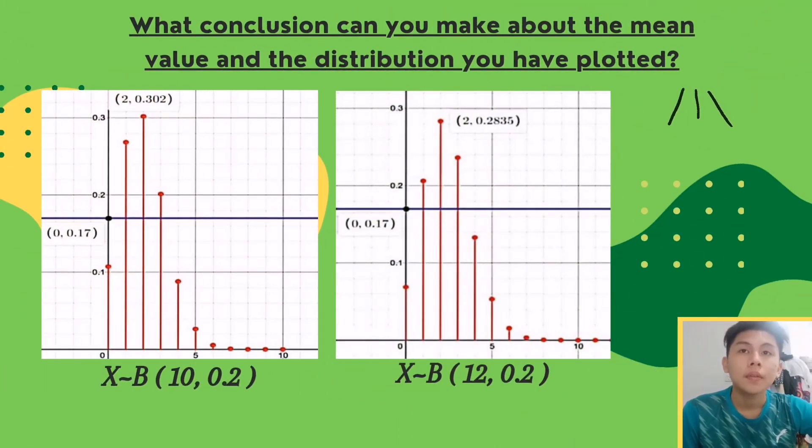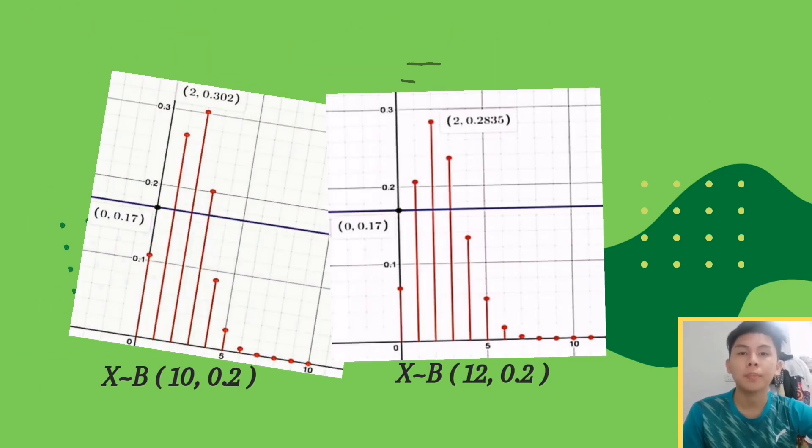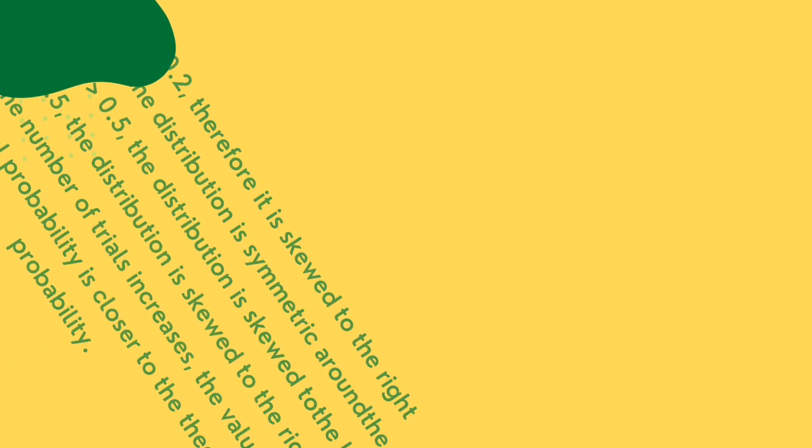As you can see, there are two graphs. Both are binomial distributions with the same p-value of 0.2. For the number of trials taken, the first graph is 10 and the second is 30. What conclusion can we make about the mean value and the distribution we have plotted?